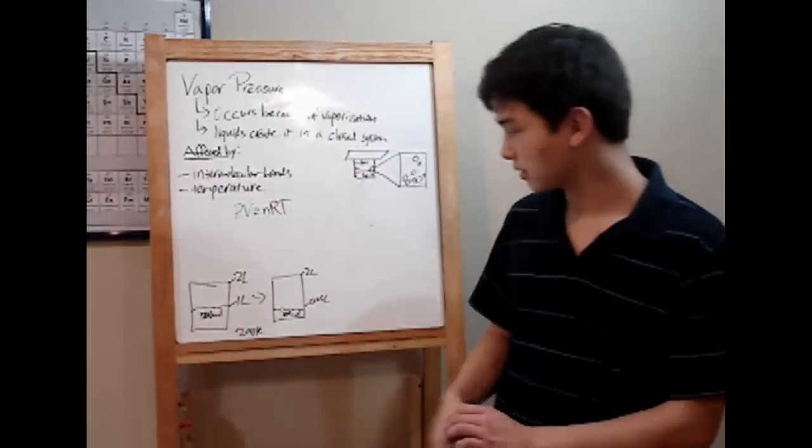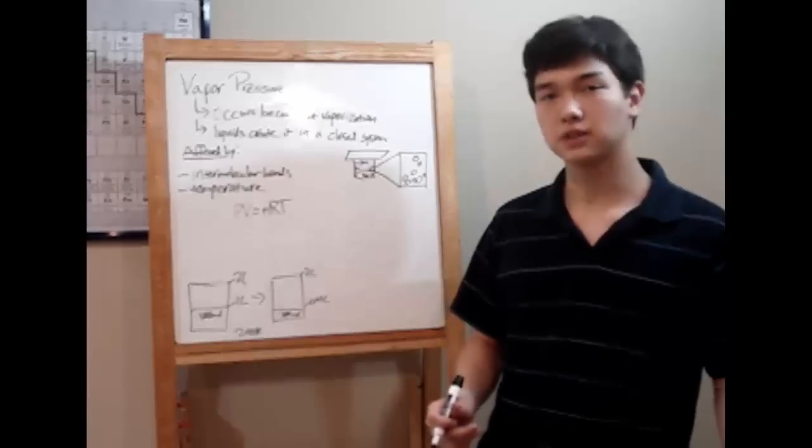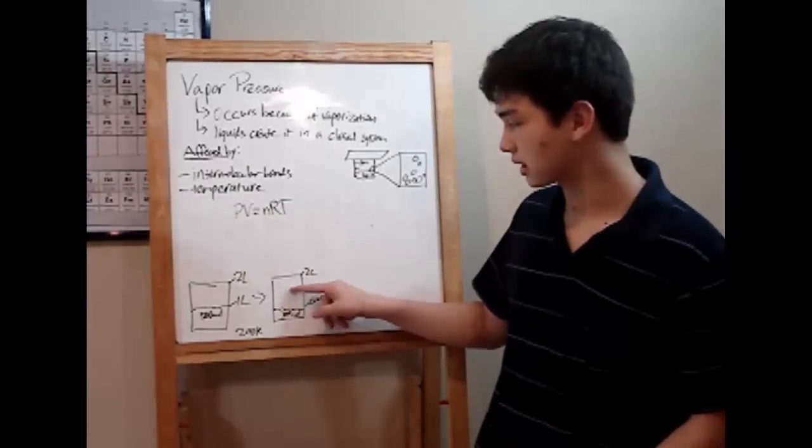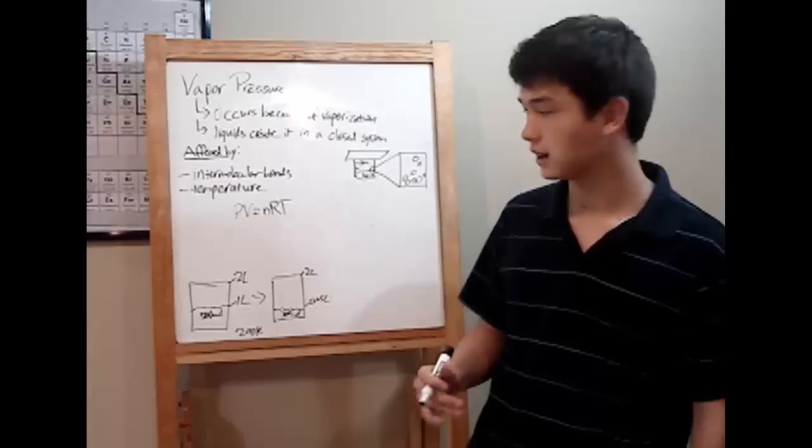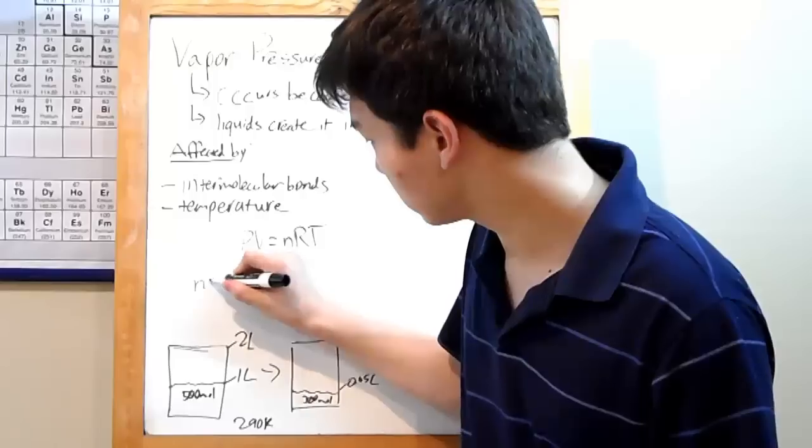We know that we initially had 500 moles of liquid water, and now we have 300 moles. The remaining 200 must have evaporated and become part of the gas. Since pressure is what we're looking for, we need to find everything we can about that gas. So, n is 200 moles.